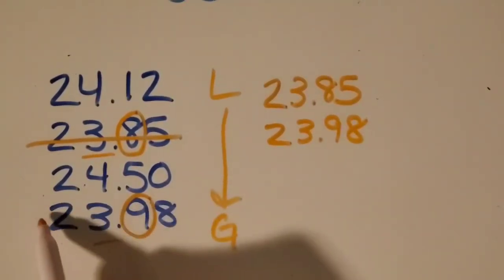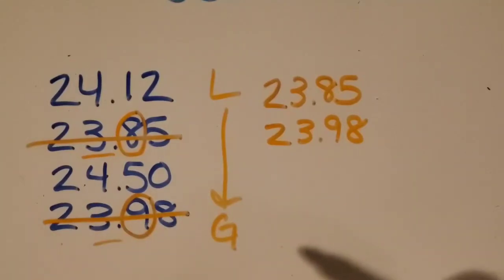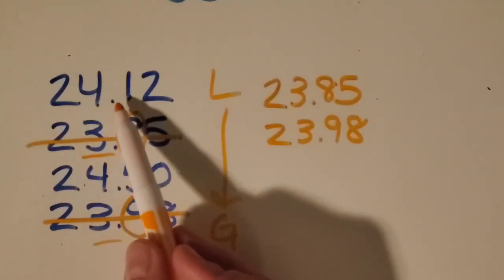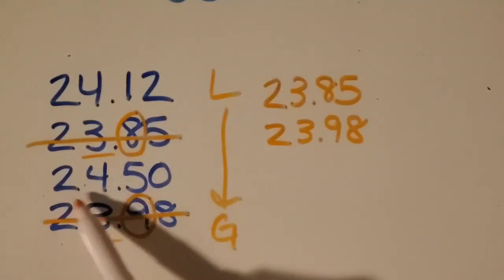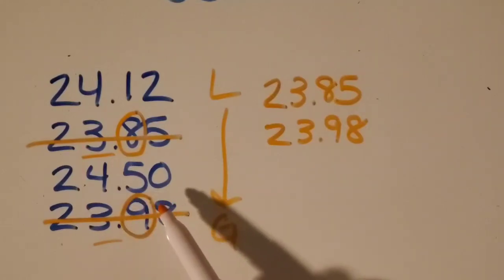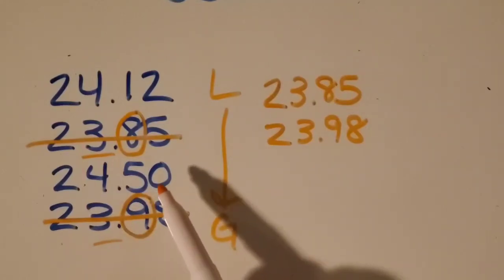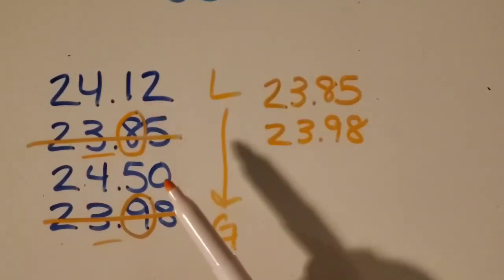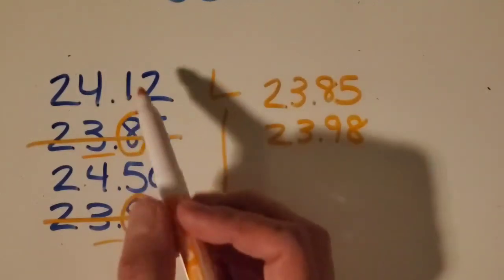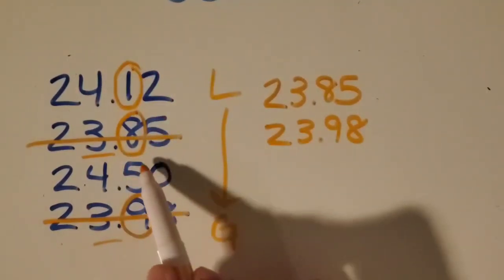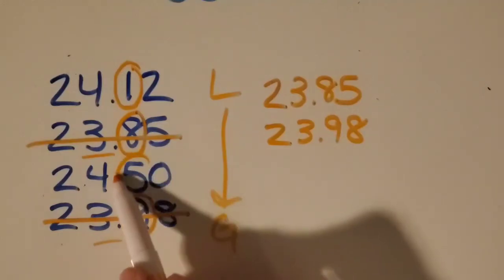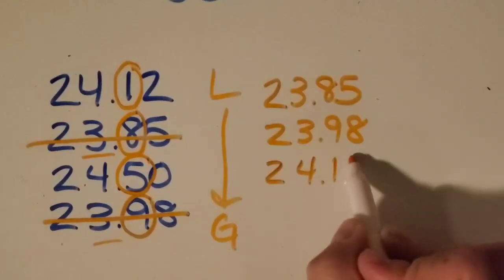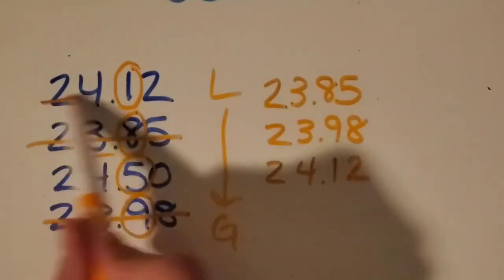Then I can compare these two numbers. So I've got twenty-four and twelve hundredths, twenty-four and fifty hundredths. I can tell which one sounds smaller just by saying that twelve hundredths and fifty hundredths. Twelve sounds smaller, but I can also check the tenths place. So what is smaller, one-tenth or five-tenths? Good job, it's the one-tenth, so that one goes next. Okay, cross it out, and then I only have that one left.